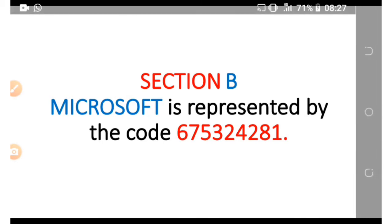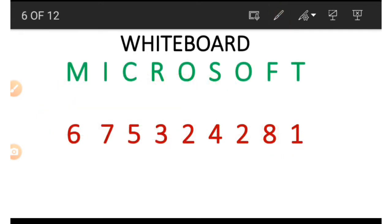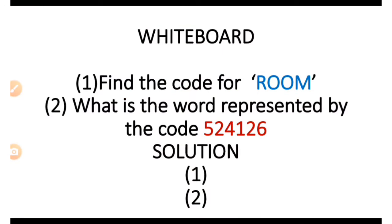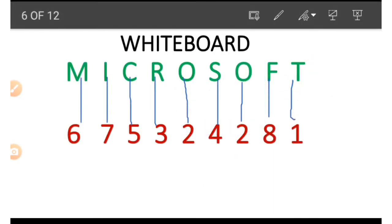Now let's go to Section B. In Section B we are going to be using codes. For example, the word 'Microsoft' is represented by a code in red. Each number in the code stands for a letter in the word. We can use this to form other words when given a code, or get a code for any given word. We match the letters with their corresponding numbers. In the first question we have the word 'room' — it starts with R, and R is a 3.